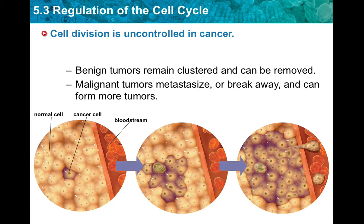Malignant tumors are metastasized — they break away and can form more tumors, which is really deadly. These are tumors in which cells break away and spread to other parts of the body, causing harm to the organism's health. The term 'metastasize' means to spread by transferring a disease-causing agent from the site of disease to other parts of the body via the bloodstream and lymph, making it difficult to remove.